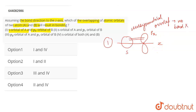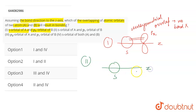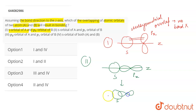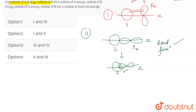The second case is the s orbital of A and the pz orbital of B. We are considering z as the nuclear axis, and the pz orbital is aligned along it. A head-on overlap can take place: the s orbital and the pz orbital overlap along the nuclear axis. This is symmetrical, so a sigma bond formation will take place here.